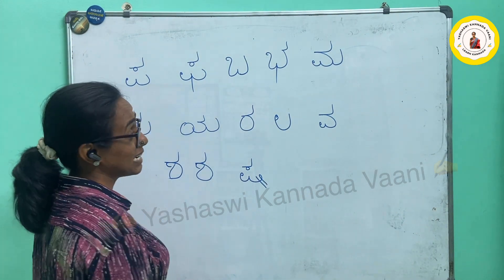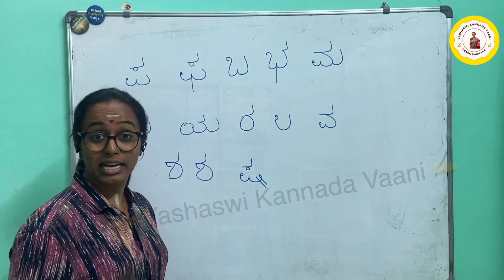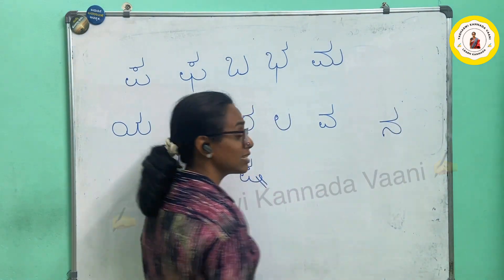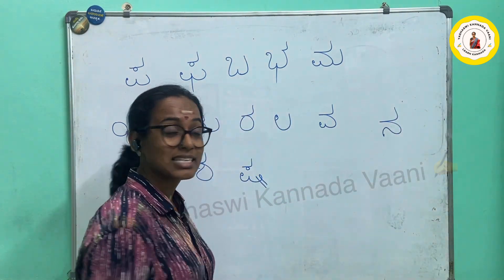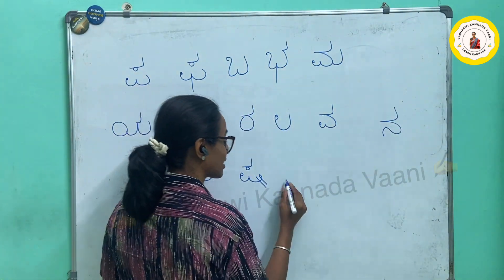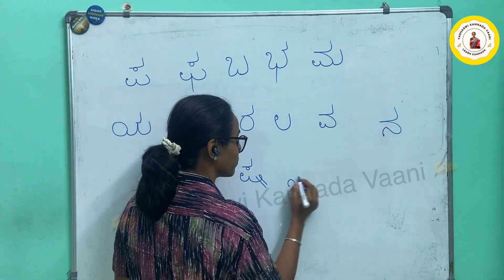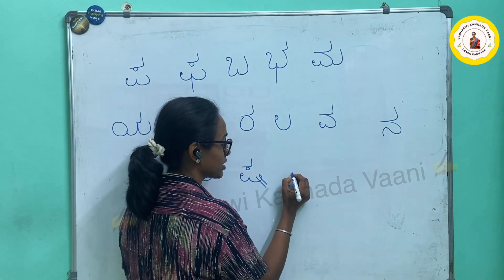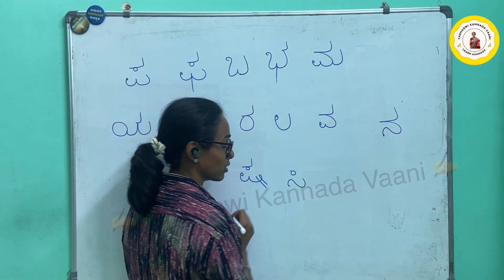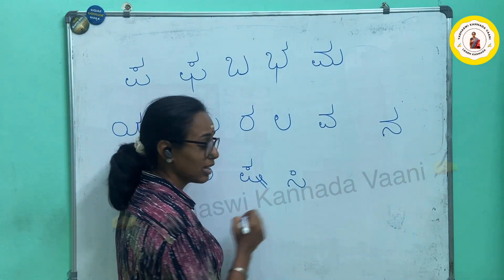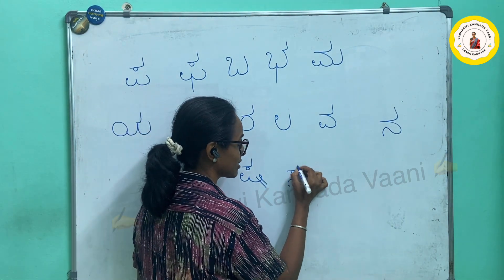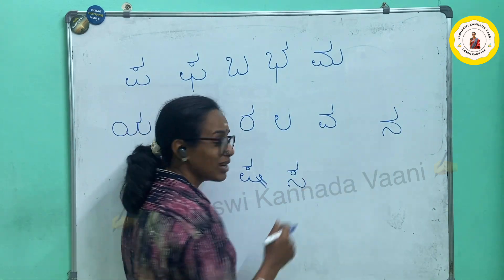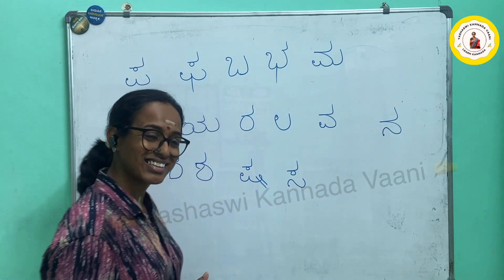Next is letter SA. Do you remember the letter N which was like this? Now first write the bottom — do not continue, stop that. Put a circle, zero. Then put a TALYA. This is my letter SA — it's all very similar to letter N.